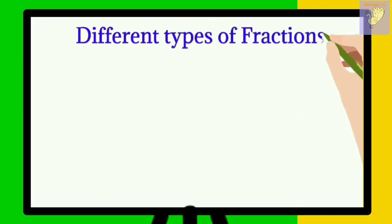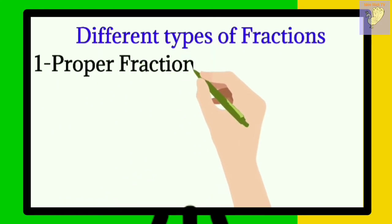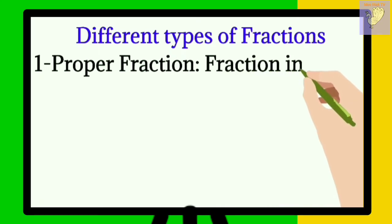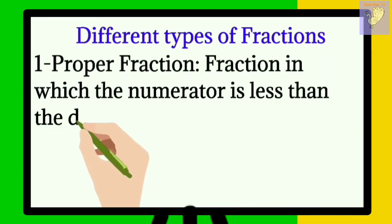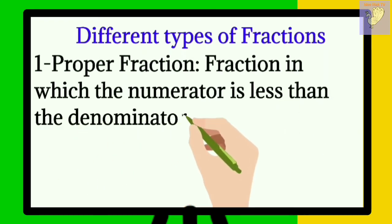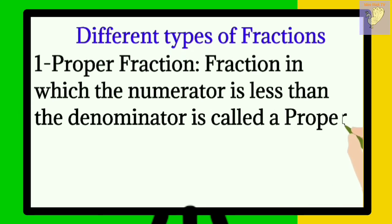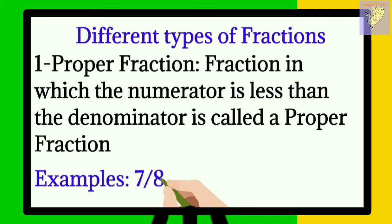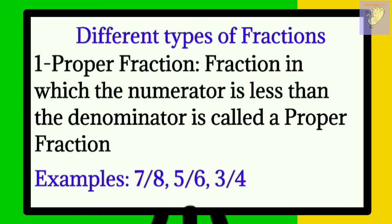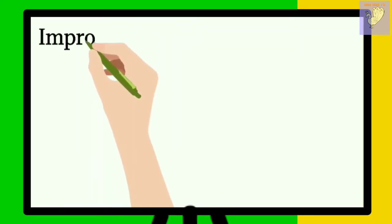Now we are going to talk about the different types of fraction. Number one is proper fraction. A fraction in which the numerator is less than the denominator is called a proper fraction. Examples of proper fractions are 7 upon 8, 5 upon 6, and 3 upon 4. In all these cases, the numerator is smaller than the denominator.